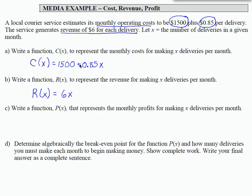So that will be $6 times each delivery. The first part is how much it costs us to run our business every month per delivery. The second part is how much revenue we get for each delivery. What we normally want to know in a business situation is how many deliveries do we need to make to make a profit?